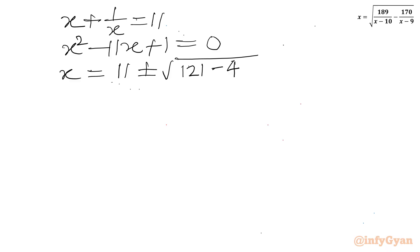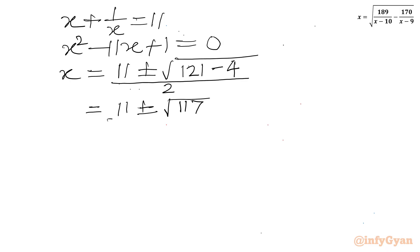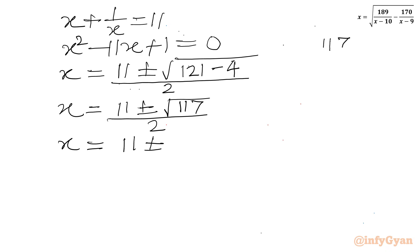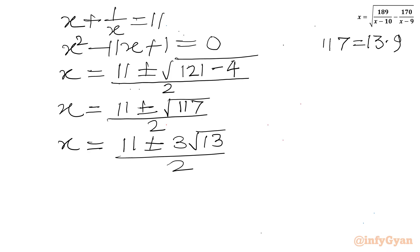For a equal to 11: x plus 1 over x equal to 11 gives x² minus 11x plus 1 equal to 0. Using the quadratic formula: x equals (11 plus or minus square root of 117) over 2. Since 117 equals 9 times 13, we write x equals (11 plus or minus 3 square root of 13) over 2. Again we have 2 real solutions, so overall there are 4 real solutions.